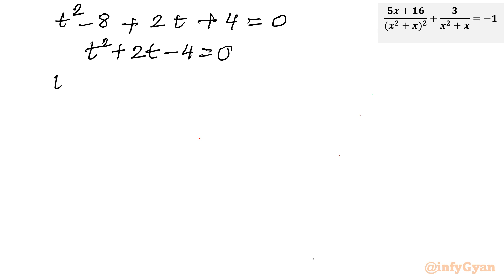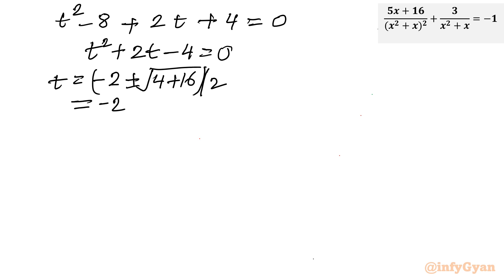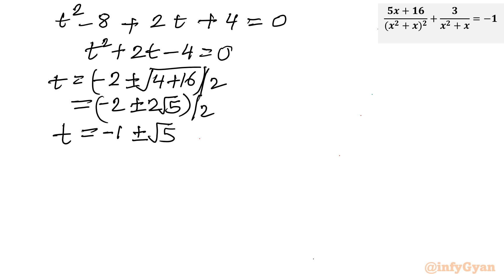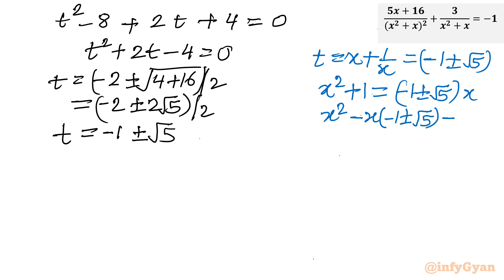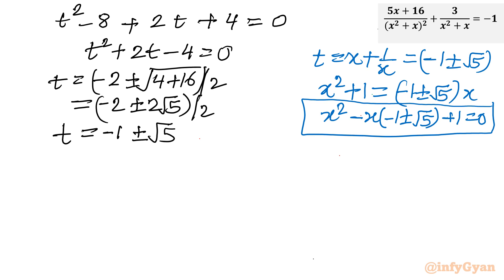Applying the Sridharacharya formula: t = (−2 ± √20) / 2 = −1 ± √5. Substituting back t = x + 4/x and multiplying by x: x² − (−1 ± √5)x + 4 = 0. This is the same equation as obtained in Method 1, so the results are identical — four complex solutions.